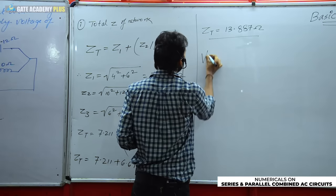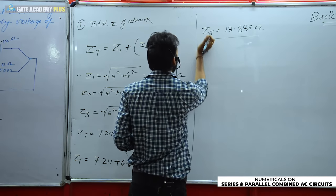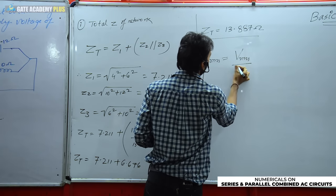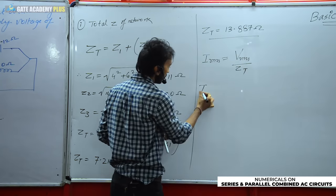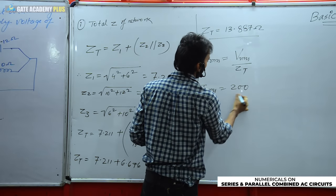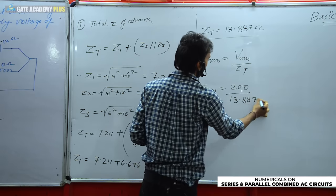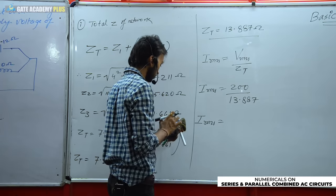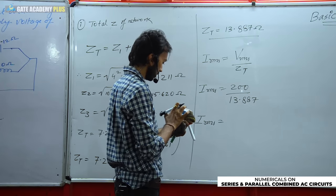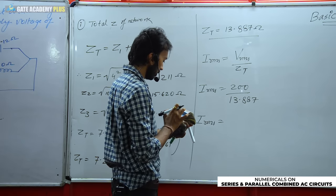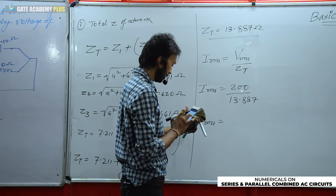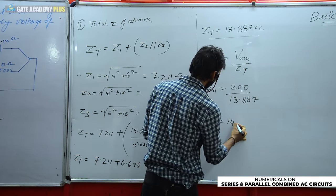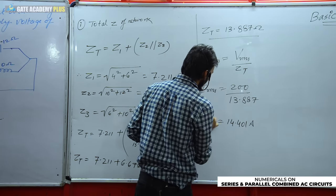Now we find I_RMS. Using Ohm's law: I_RMS = V_RMS / Z_total = 200 / 13.887 = 14.401 amperes. This is the supply current value that was asked in the question.